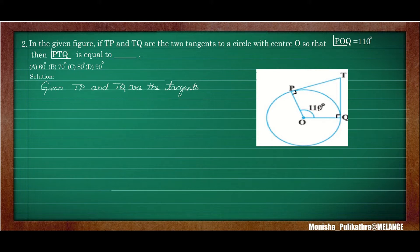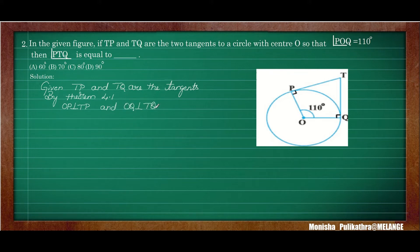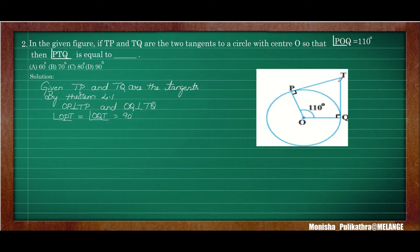By theorem 4.1 (perpendicular theorem), OP will be perpendicular to TP and OQ will be perpendicular to TQ. When it becomes perpendicular, both angles are 90 degrees. Therefore, angle OPT and angle OQT are both equal to 90 degrees. We can notice in the diagram that OPTQ is a quadrilateral, and the sum of interior angles of the quadrilateral equals 360 degrees.